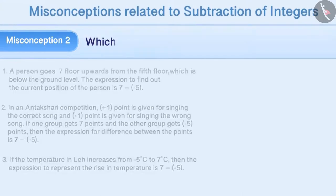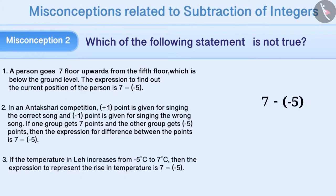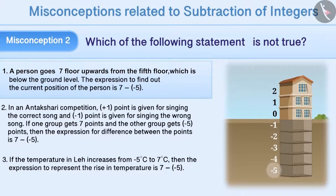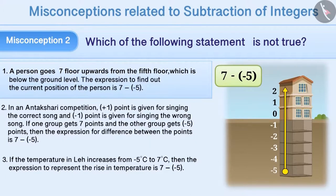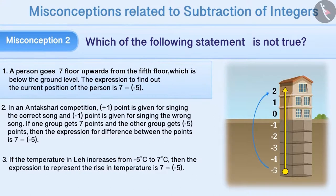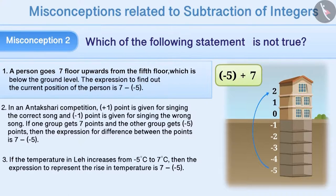Misconception 2. Which of the following statements is not true? In the given expression, the operation of subtraction of integers is performed. From the given statements, we need to identify a statement which is not suitable for this expression. The first statement says that a person goes 7 floors upwards from the 5th floor below the ground level. To find out the current position of the person, minus 5 is subtracted from 7, written as 7 minus minus 5. This is a misunderstanding. Since the person is moving 7 floors upwards from the minus 5th floor, the current floor position can be found by the expression minus 5 plus 7. Therefore, the first statement is not true. This means this is the answer to the given question.